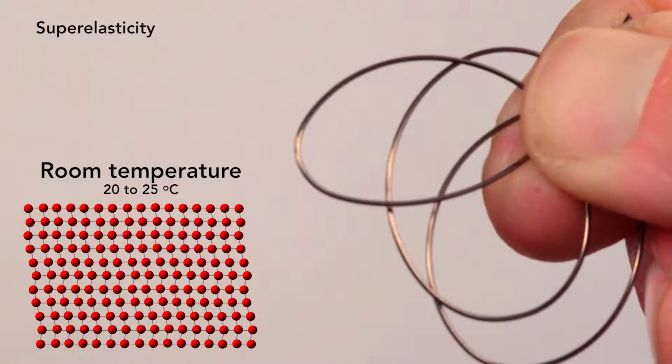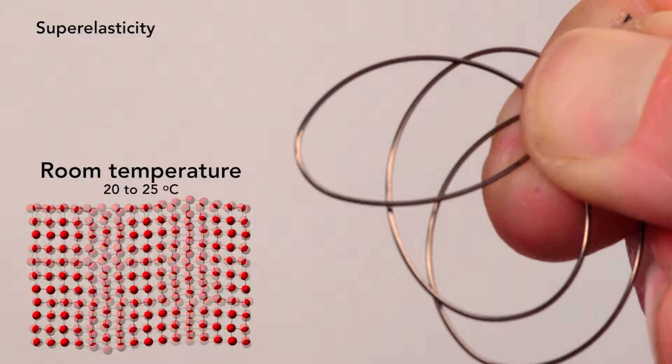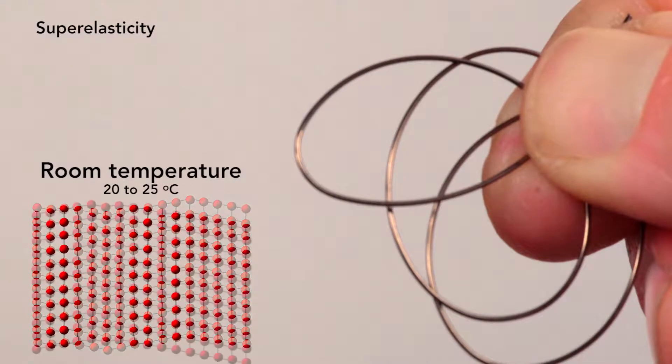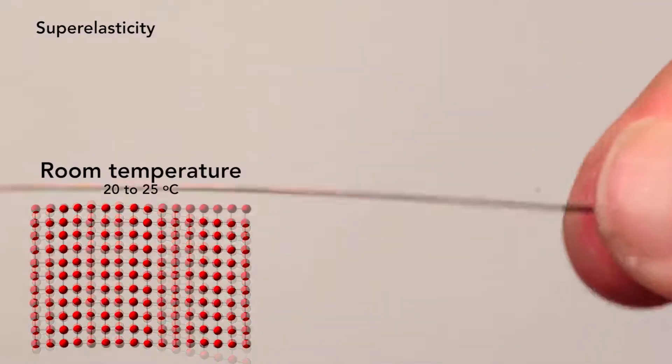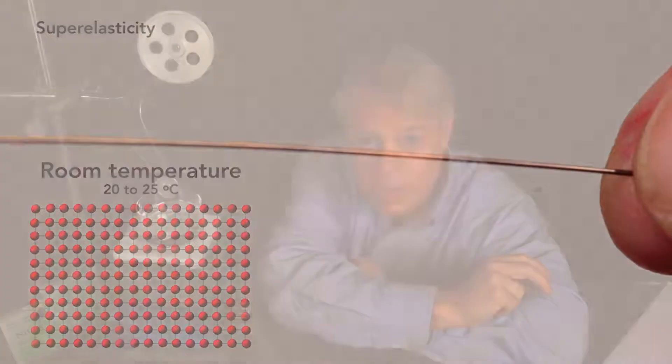When I apply an external force to the wire, the crystallites and the grains deform into the rhombuses, whatever mix of those would allow it to accommodate the reshaping. When I remove the force, then, because it's at room temperature, it returns to the tidy squares.